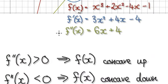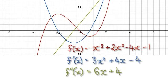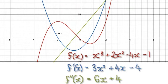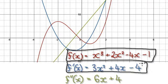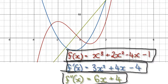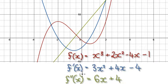And there's a reason why that is. If you look at this here, the red line represents the original function. The blue line here represents the first derivative. The green line represents the second derivative.